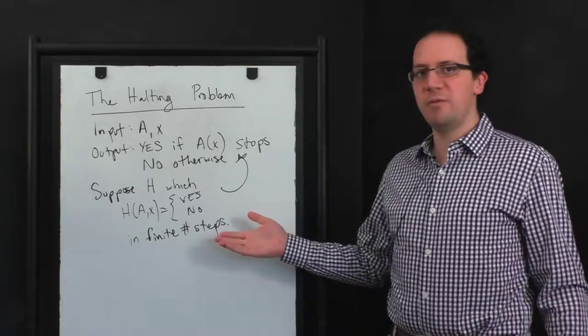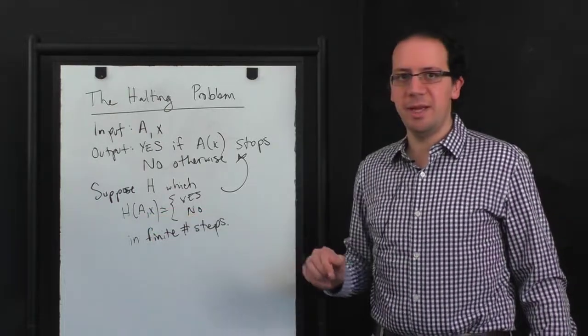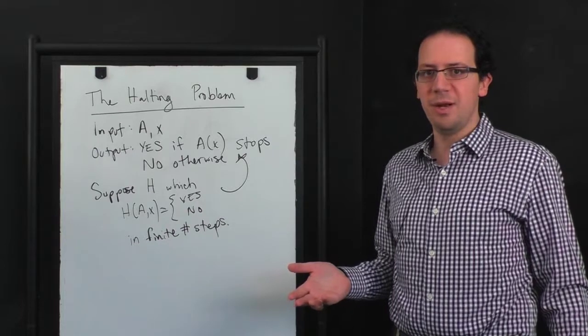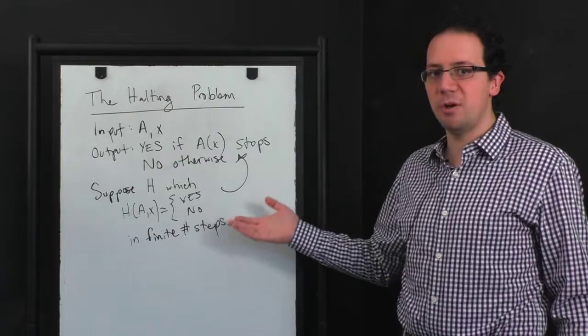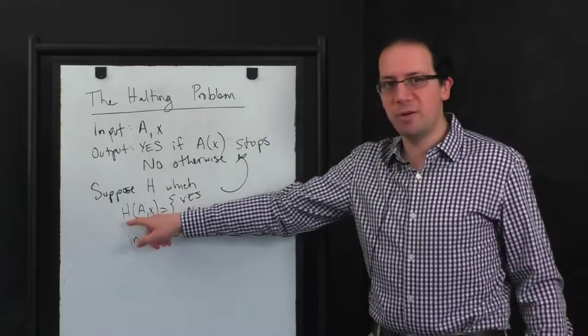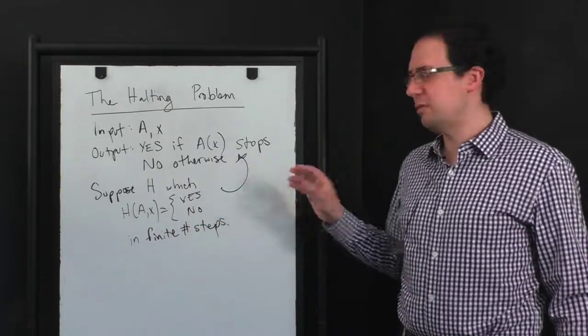If you allowed H to run forever, well okay you know H could just simulate A on X. And if A doesn't halt then H isn't going to halt either. But then H never really got to make its output. H is running forever. So when we say that an algorithm solves the halting problem, the fact that the algorithm H itself, that that algorithm always halts, is a crucial piece of this puzzle.